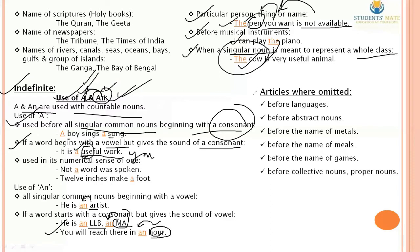Next, let's talk about where articles are omitted — that is, where articles are not used. First, before languages — articles are not used before the names of languages.